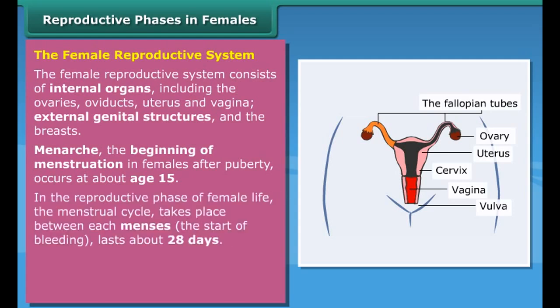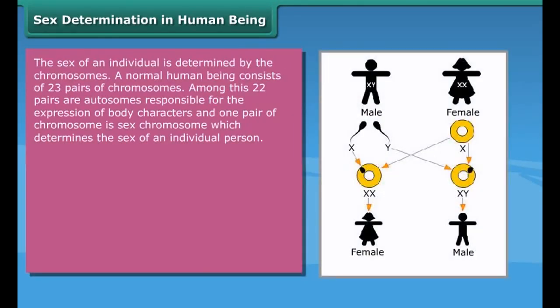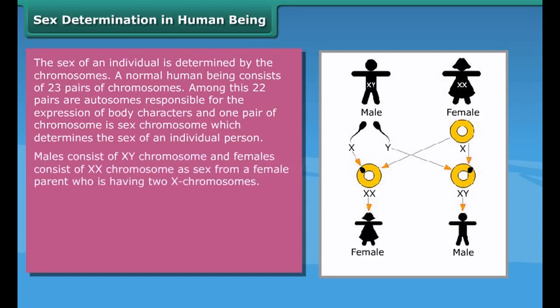The pancreas is both an endocrine gland — producing several important hormones including insulin — as well as an exocrine gland secreting pancreatic juice containing digestive enzymes that pass to the small intestine. These enzymes help in the further breakdown of carbohydrates, protein, and fat in the chyme. The adrenal glands, also known as suprarenal glands, are the triangle-shaped endocrine glands that sit on top of the kidneys, chiefly responsible for regulating the stress response through adrenaline hormones.